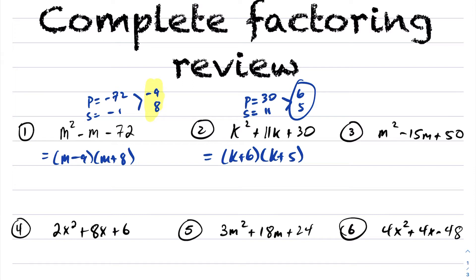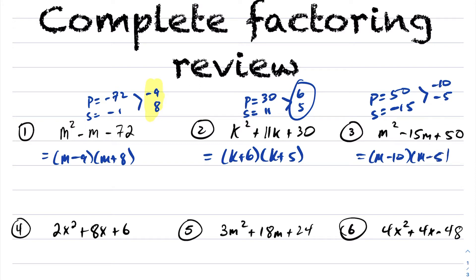Continuing again — obviously another simple trinomial. My product is 50 and my sum is negative 15. Don't forget to take the sign in front; a lot of times people forget that. Two numbers that multiply to be 50 and add to be negative 15 are negative 10 and negative 5. So this factors into m minus 10 times m minus 5. Order doesn't matter — multiplication is commutative.